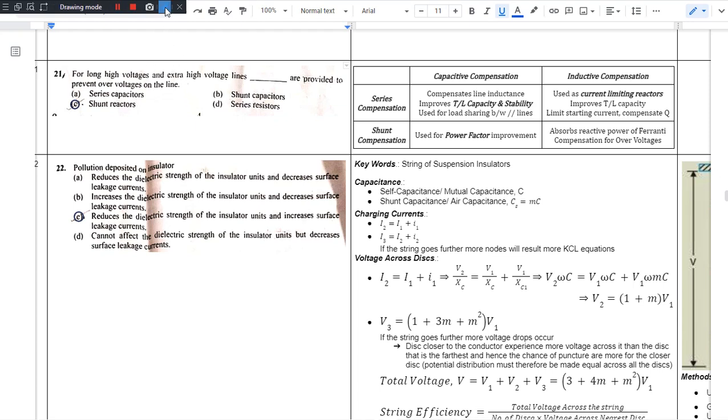Hello there, notes link in description only. The video below, question number 21. For long high voltage and extra high voltage lines, what are provided to prevent over voltages on the lines? And the answer is shunt reactors. So shunt reactors is the answer.